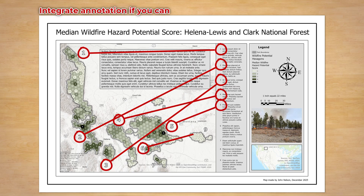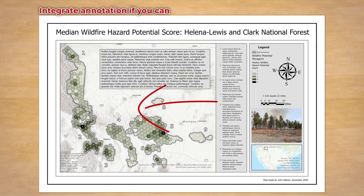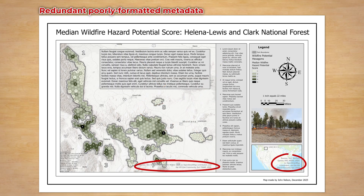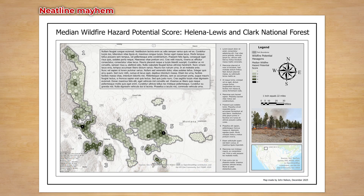Instead of creating a scavenger hunt for information, just put it into context. If you've got room for it, integrate text with visuals. These automatically added attributions are redundant and could be formatted better, and these projection parameters just don't belong. My mom always told me to sign my work and she was right, but this wording is a little clunky.